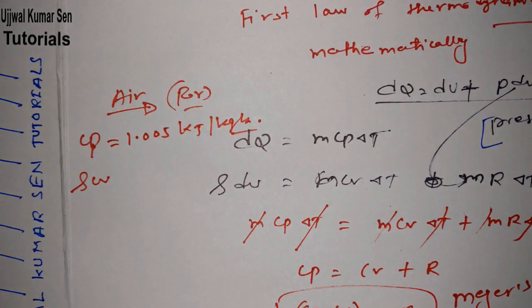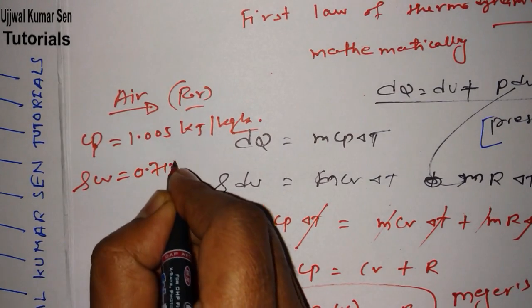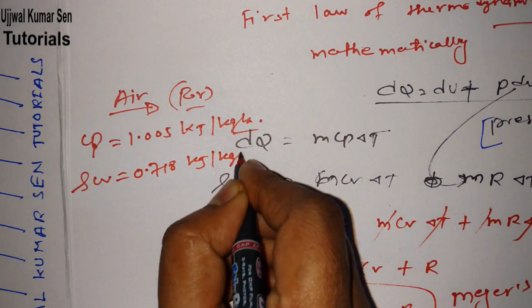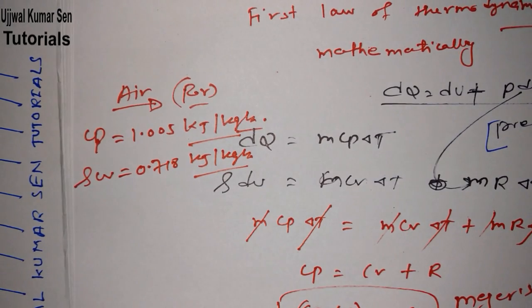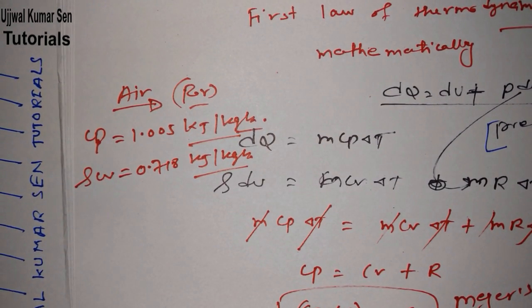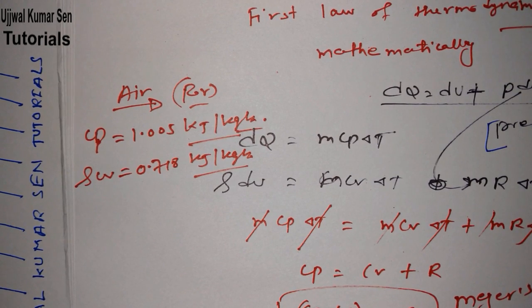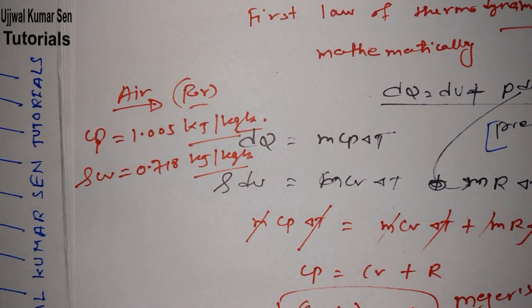If I am talking about Cv for air, it is 0.718 kilojoule per kg kelvin. So these two values are for air only. Remember that without it you cannot go further.